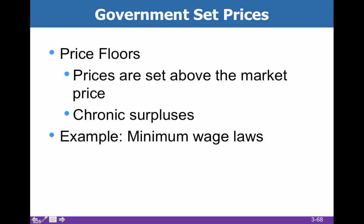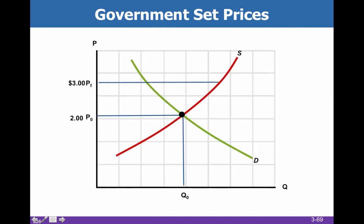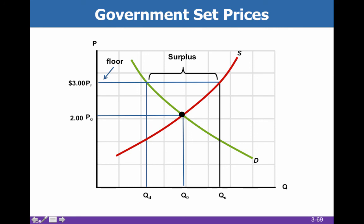A price floor is the opposite — this is where prices are set above the market price, and then we're going to have chronic surpluses. One example could be a minimum wage law. If people are willing to work for a low wage of say $2 per hour, but the government sets a minimum wage of $3 per hour, then the supply of workers is going to be really high — everybody wants that job — but the demand for workers is going to be relatively low. In the end, fewer people will be employed. The people who are employed will make more money, but all of these other people will not be employed at all.